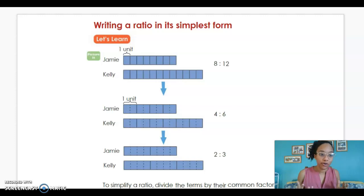Writing a ratio in its simplest form. Simplest form is always about dividing because we're going from bigger numbers to smaller numbers. So when we see 8 to 12 for Jamie's to Kelly's money, we're going to divide by the greatest common factor in order to find the simplest form.